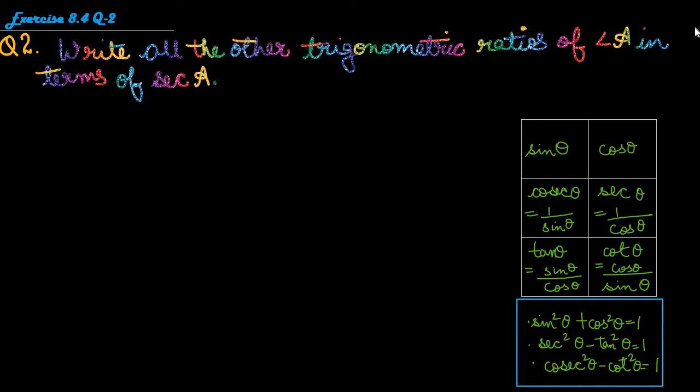Question number 2 is: write all the other trigonometric ratios of angle A in terms of secant A. Some necessary trigonometric ratios in secant A form will be written. So let us start with the answer.